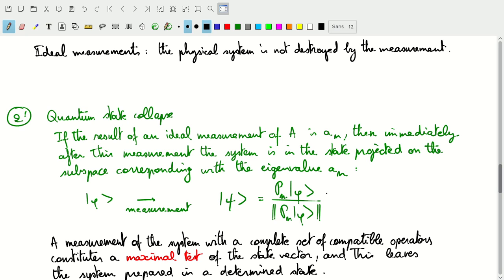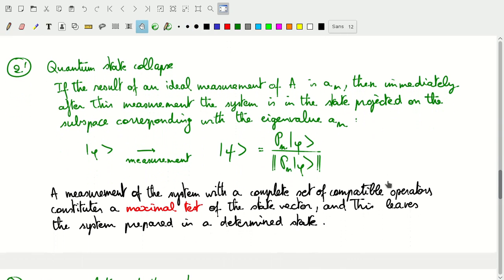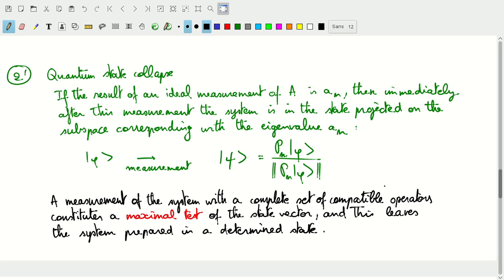If we force our state along that single eigenvector, then of course we've prepared our system in a very determined state where we can use it for future measurements.